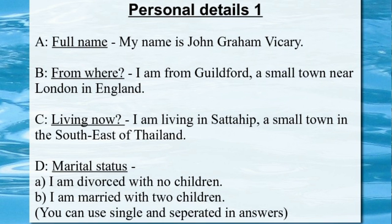Your marital status, and whether you have children or not — include the number of children. The question: What's your marital status? Example A: I am divorced with no children. Example B: I am married with two children. You can also use single and separated as appropriate answers to this question.